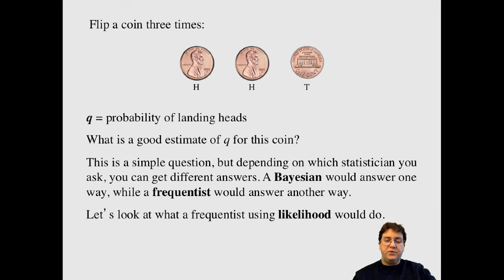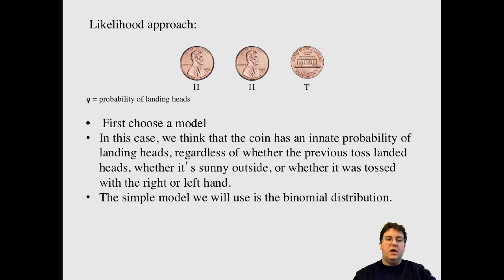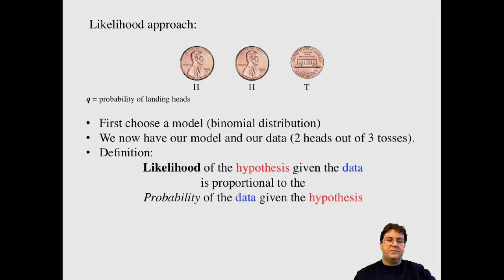Let's first look at what the cartoon frequentist would do. Okay, so first you need to choose a model. So in this case, we think the coin has an innate probability of landing heads. That does not depend on whether the previous coin toss was heads, whether it's sunny outside, whether it was tossed in the right or left hand, any other information like that. So it's a very simple model. And so for that model, binomial distribution works best. So now we have our model. We have our data. So I need to do likelihood.